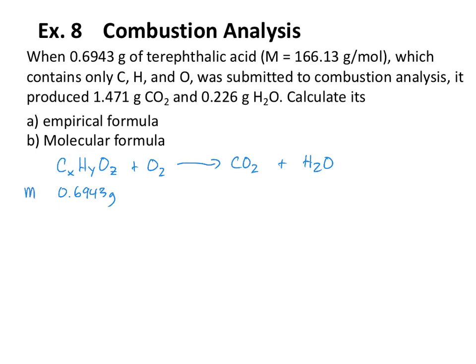We'll call that mₜ, mass total, and that is burned to create a mass of carbon dioxide equal to 1.471 grams, as well as a mass of water equal to 0.226 grams. The key idea here is that the mass of carbon in the CO₂ is equal to the mass of carbon in the original compound.